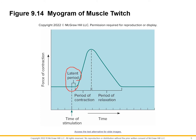Looking at the chart, the latent period is very short — all that signaling happens very quickly. Then the sarcomere shortens during the period of contraction. Acetylcholinesterase is released and the muscle relaxes. The period of relaxation is longer than the period of contraction — it takes longer to return to the resting state than it does to go from relaxed to contracted.